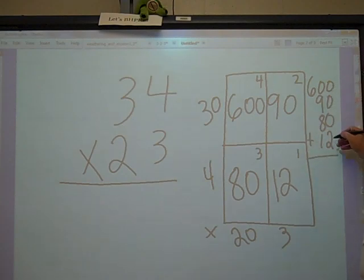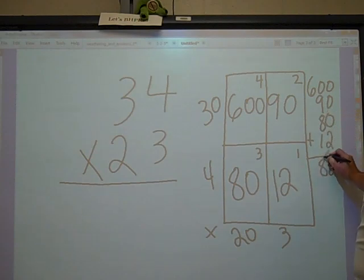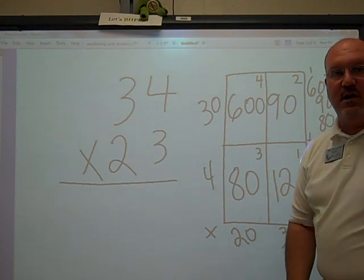0, 0, 0 is 2. 9 and 8 are 17, and 1 is 18. Carry a 1. 1 and 6 is 7. 782 is our product.